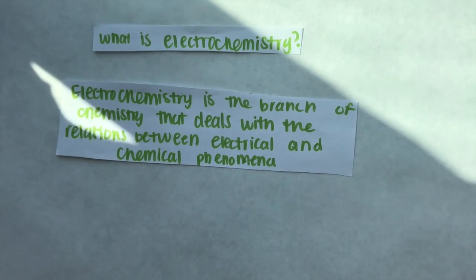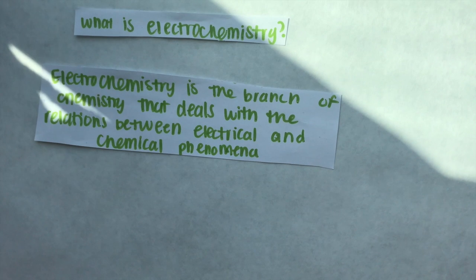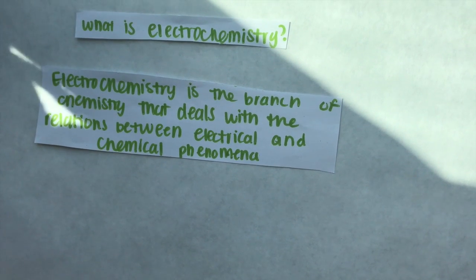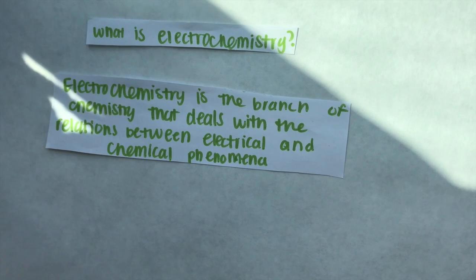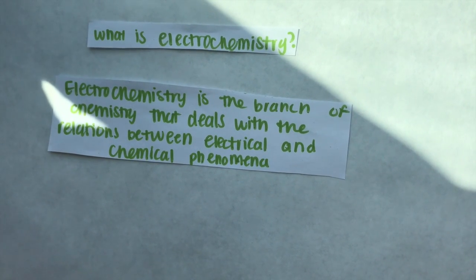Electrochemistry is the branch of chemistry that deals with the relations between electrical and chemical phenomenon. Electrochemistry is the science behind what powers our phones and almost every other electricity powered device. In order to fully understand the functionality of our devices and open windows into making our own devices in the future, we have to understand how the batteries are made and how they function.